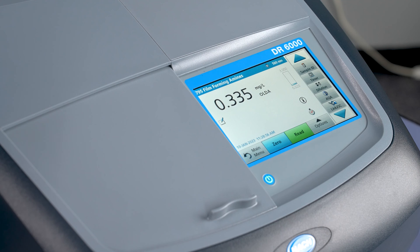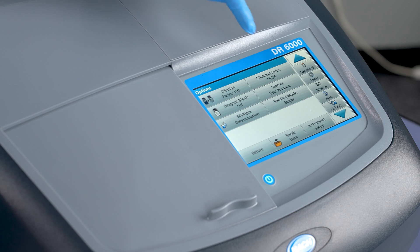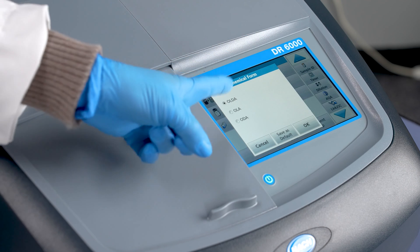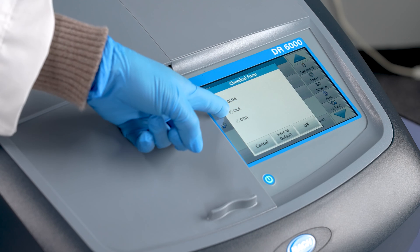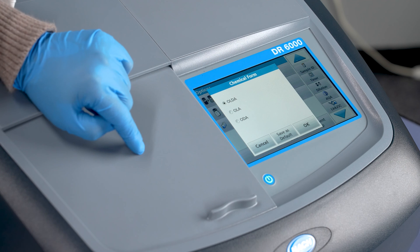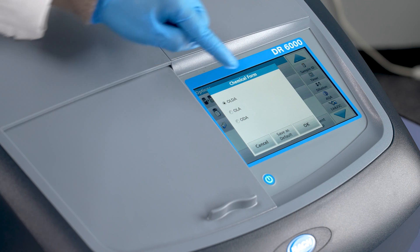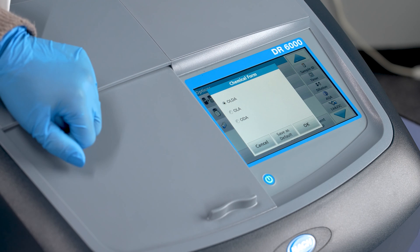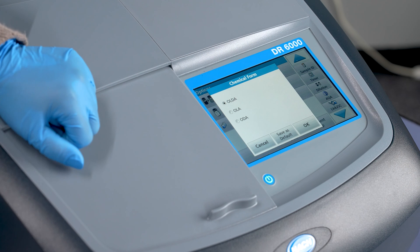However, if you're using a different type of film forming amine, for example ODA or OLA, then the instrument will actually give you the proper reading for those forms. First, go to Options, then choose More, and then choose Chemical Form. You will now see that you can choose OLDA, ODA, or OLA as your form factor. If you're always going to be using one particular form, you can choose that and make that default so that every time you run your test, you will be reading your value in the actual film forming amine that you are using.